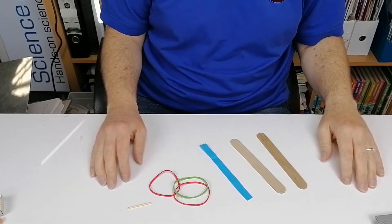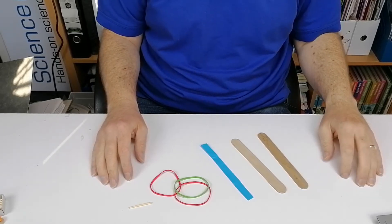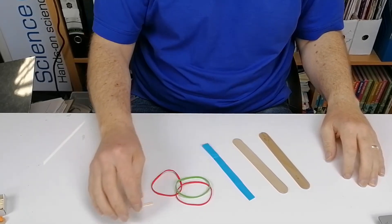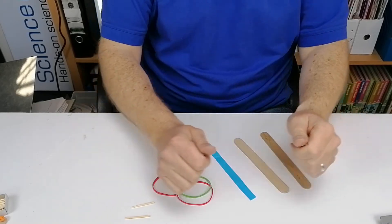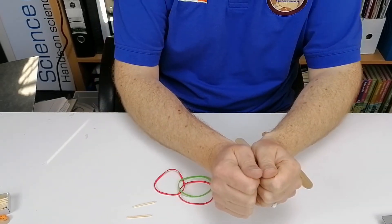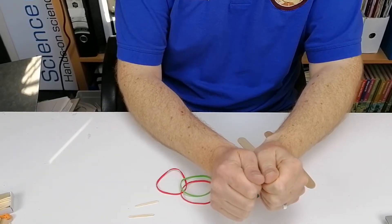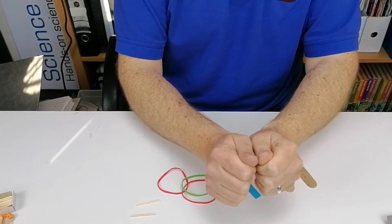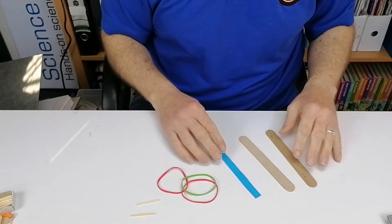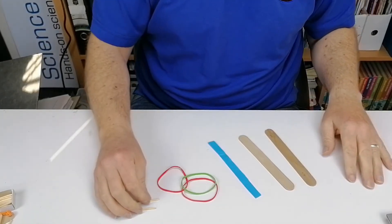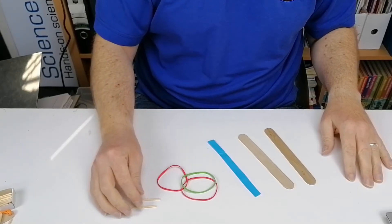In this activity, we're going to make a lollipop stick harmonica. It's similar to when you put a blade of grass between your two thumbs and blow really hard to get that buzzing sound. We're going to make two different ways to do this.